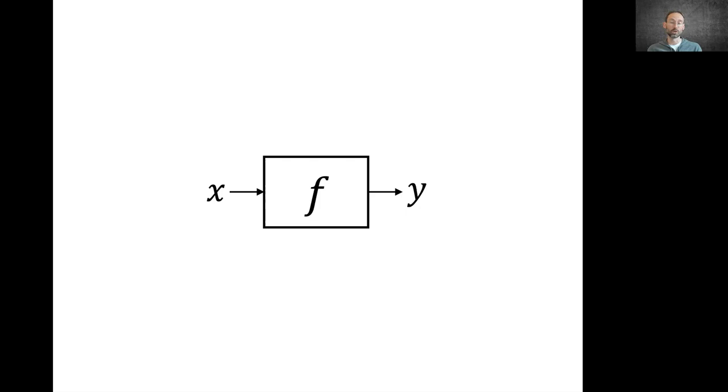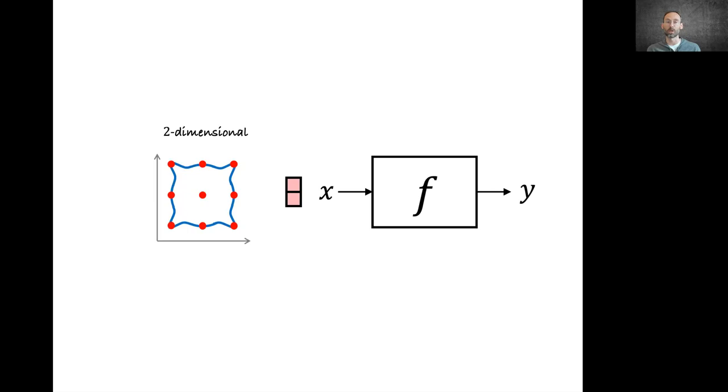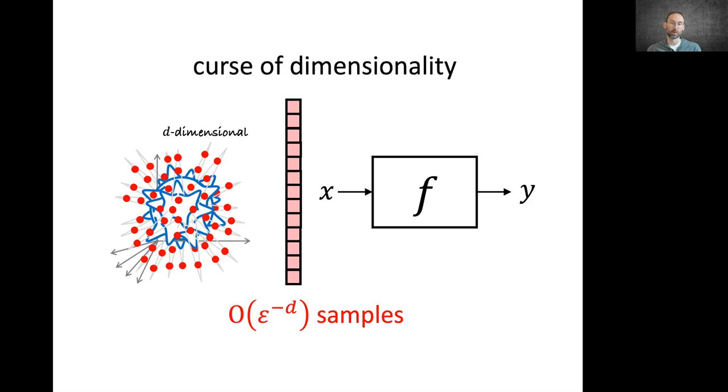In order to approximate even a simple class of, say, Lipschitz continuous functions, such as this example of a superposition of Gaussian blobs put in the quadrants of a unit cube, we see that as we grow the dimension of this cube, the number of samples required grows exponentially fast with the dimension.